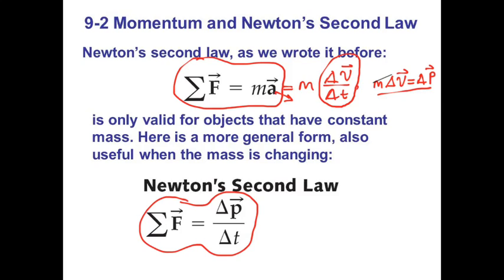So Newton's second law can be expressed as the change in momentum delta P divided by delta T. The total force acting on the object or system equals the change in momentum divided by delta T. This is Newton's second law expressed in terms of the change in momentum.